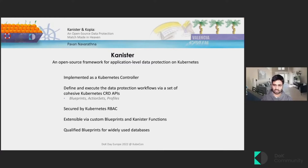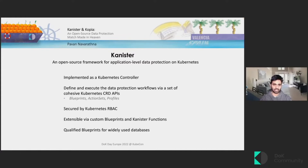Canister is also secured by Kubernetes RBAC, so the rules can be defined while installing the controller itself. It is a Helm chart, so it's easy to install and define these rules. The workflows in the blueprints are defined in the form of Canister functions, which are easily extensible and shareable. Once we define a blueprint for a particular workload — for example, a stateful set or a deployment — we can reuse it across multiple workloads. Finally, there are also a lot of pre-qualified blueprints for widely used databases on Canister.